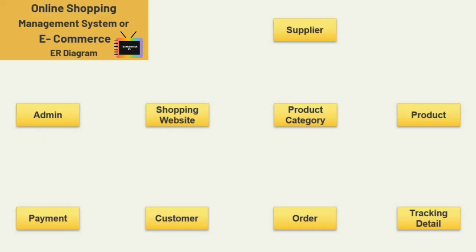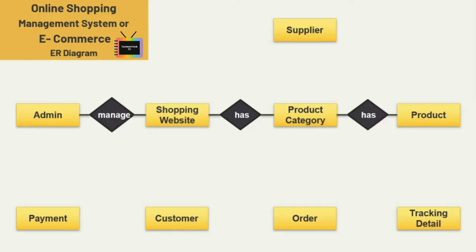Now let's define the relationships between all these entities. First is the admin and shopping website entity — admin manages the ecommerce or shopping website. Admin has full control over each and every section of the website, so I am adding a 'manage' relation here. Next, the shopping website has different product categories.